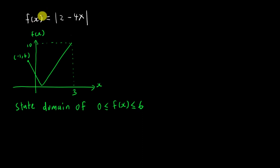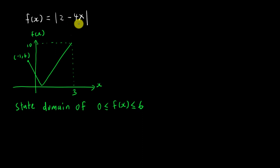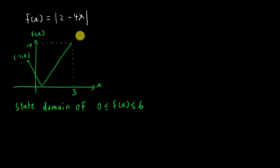The function equation here is modulus of (2 minus 4x). Whenever you see a modulus equation, you always have the V shape — as long as the power of x is 1. If the power of x is 2 or 4, you might have a W shape, but right now we focus on the V shape.